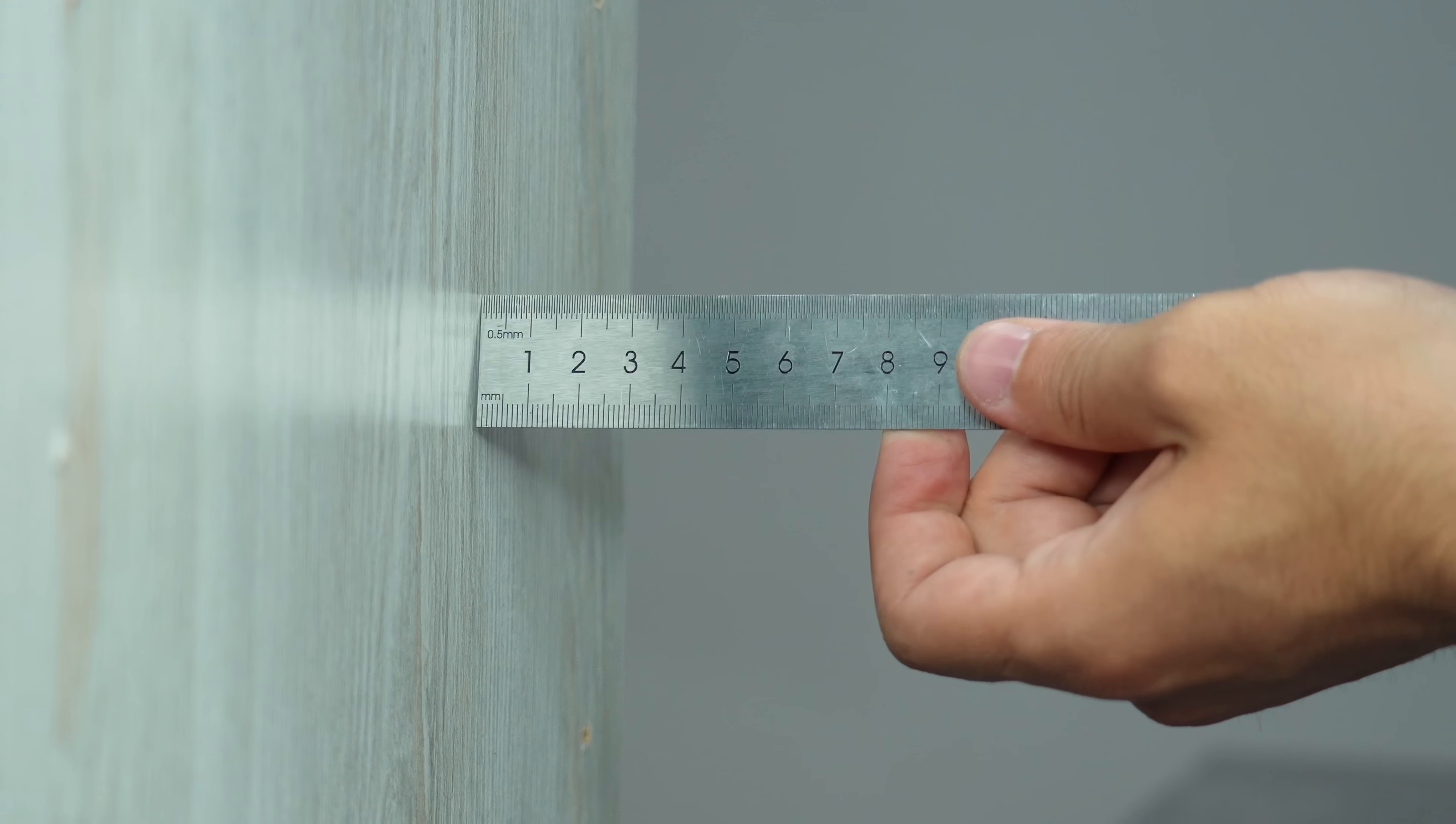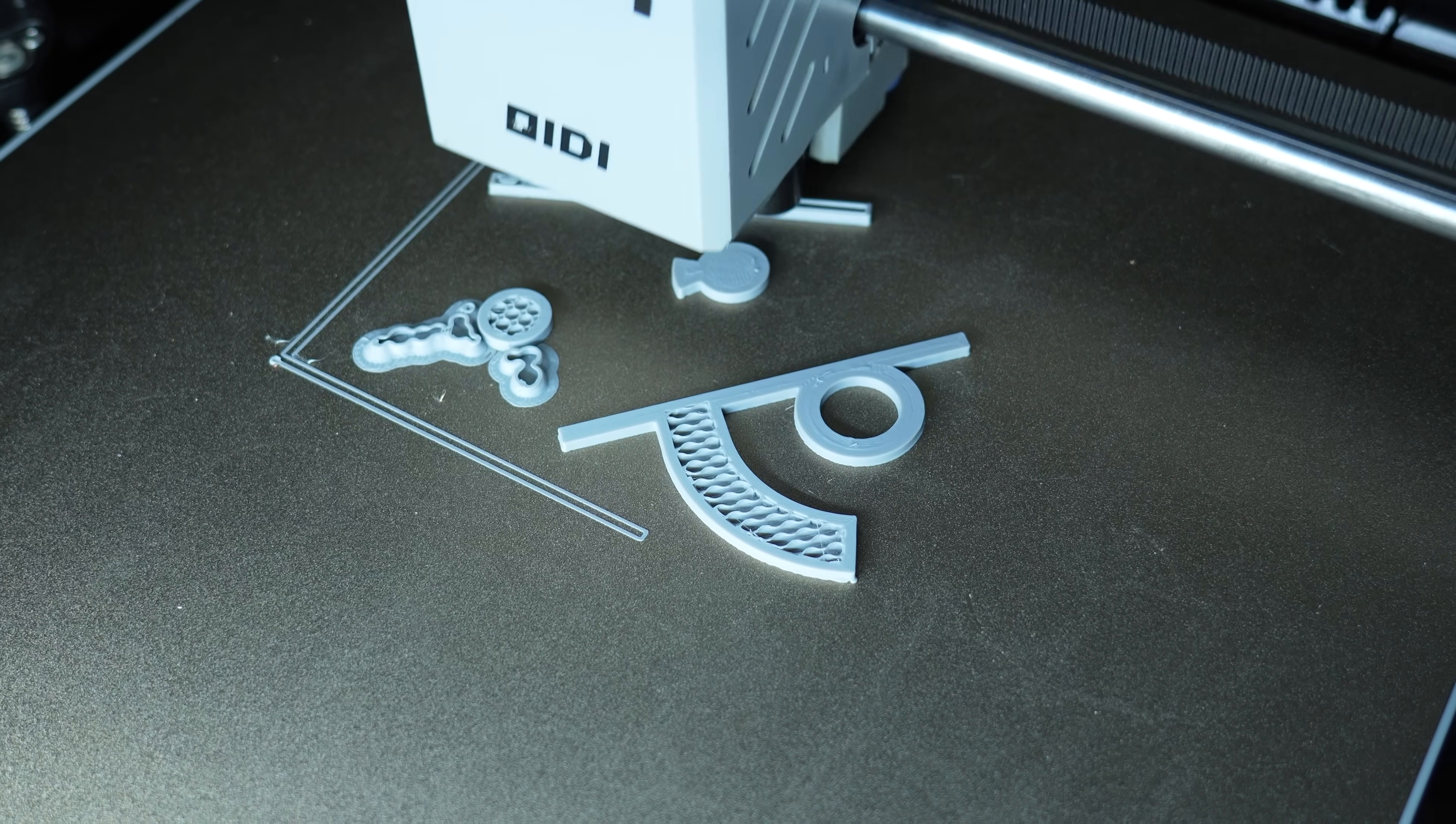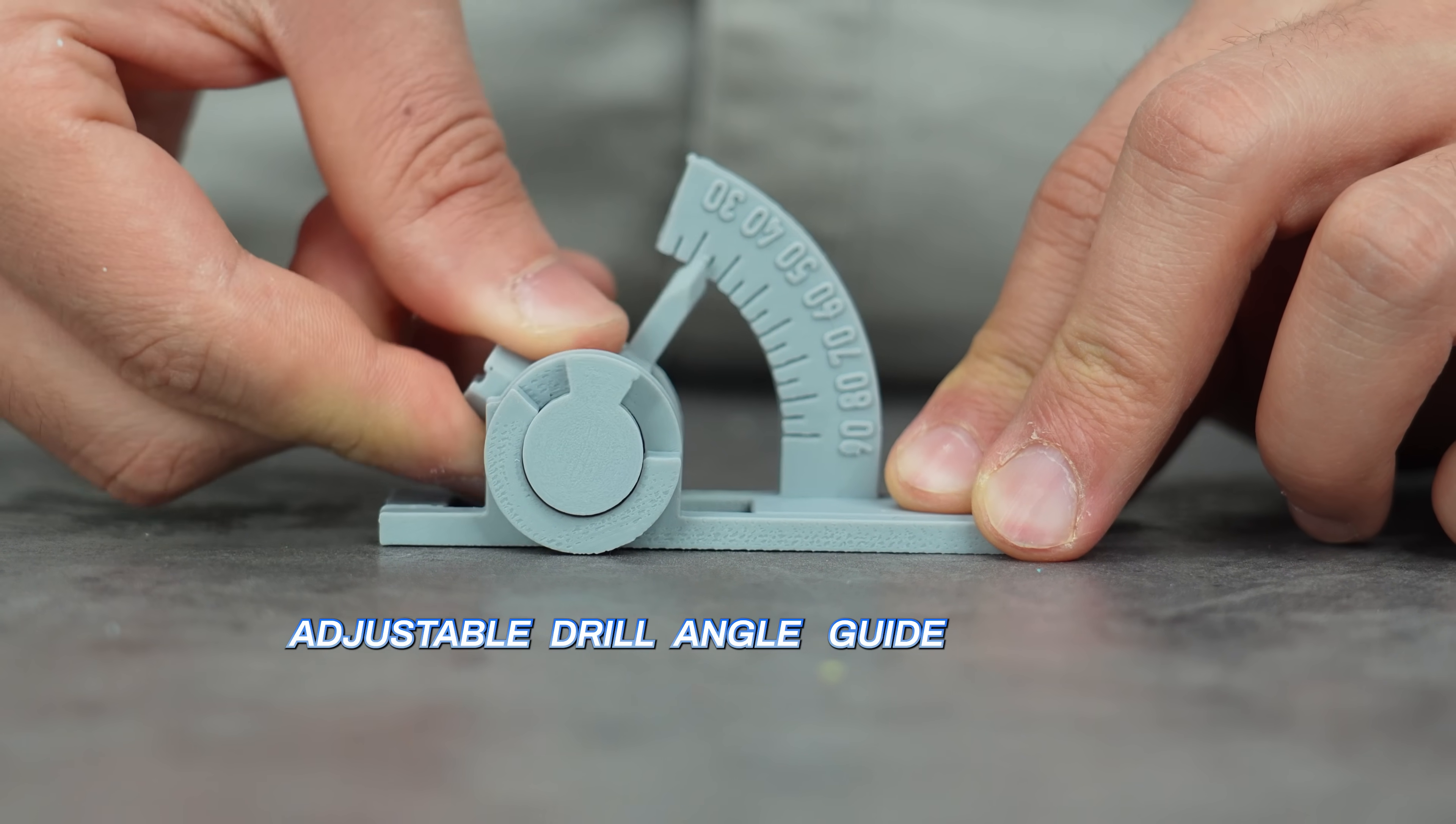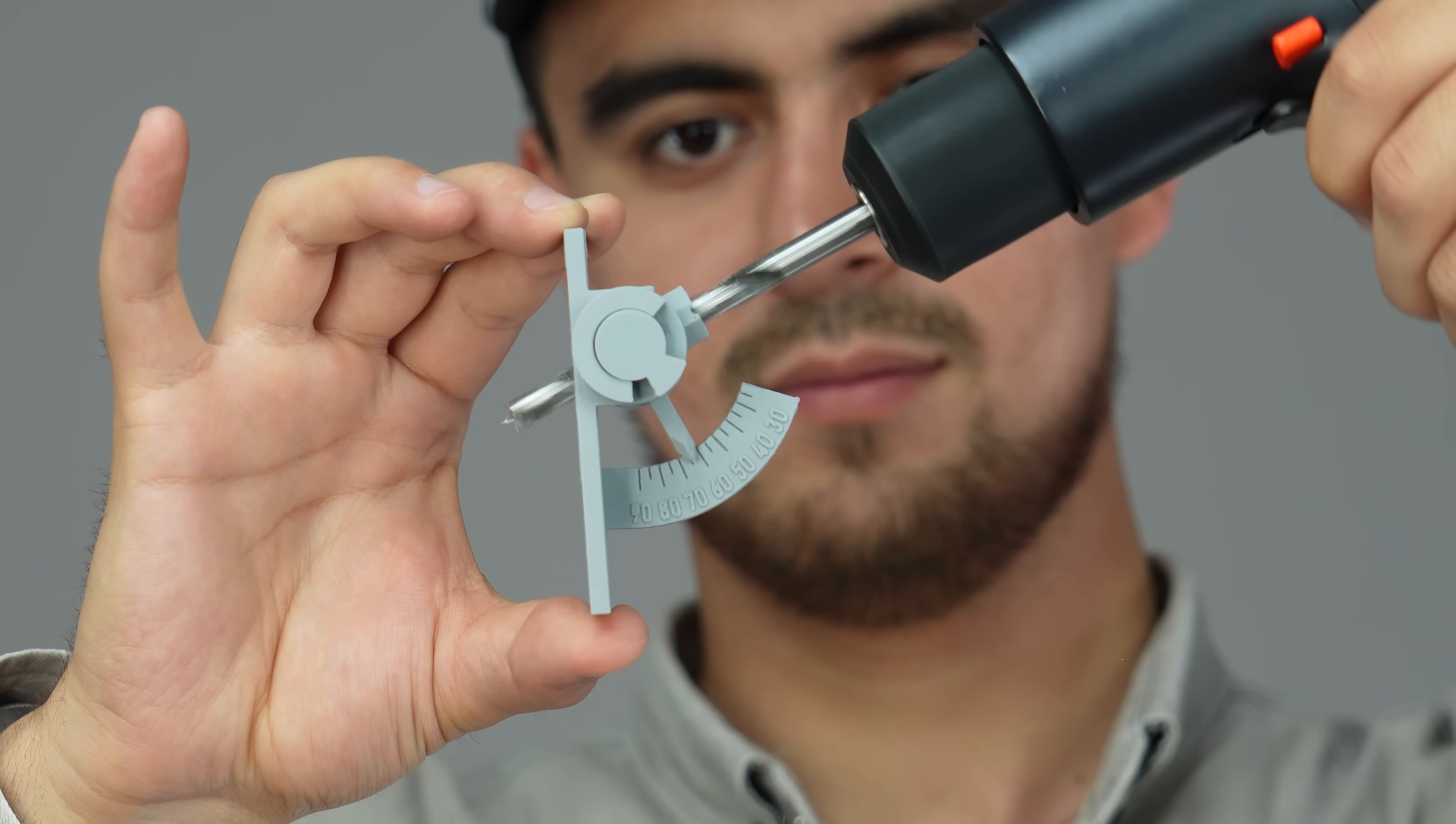Drilling at a precise angle isn't easy, especially when you're trying to eyeball it and hold the drill steady at the same time. That's exactly why I printed this, the Adjustable Drill Angle Guide. It's a compact, fully 3D printable tool that helps you drill accurate holes at specific angles without any guesswork.